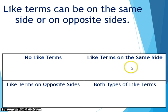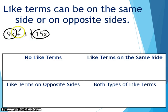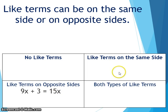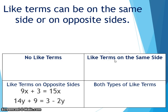Like terms can be on the same side or on opposite sides, and you could also have no like terms or both types. Looking at some equations: in the first equation, we have like terms on opposite sides. In another equation, we have 14y and negative 2y which are also on opposite sides of the equal sign — another example of like terms on opposite sides, which is what we're going to work with today.